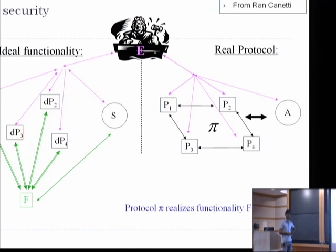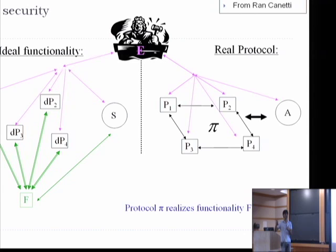The environment could itself be parallel copies of this protocol — a different session, for instance, could just be put inside the environment. Or random bits shared with other programs could all go into the environment. That's why you get universal composability: once you prove simulatability in terms of this environment driving the whole experiment, then you get universal composability. It's not a very difficult proof, actually.